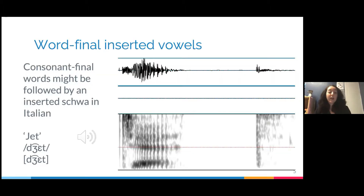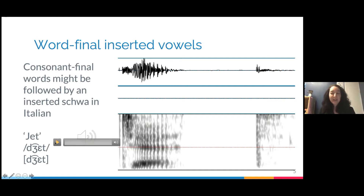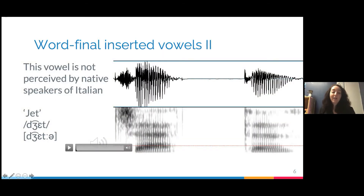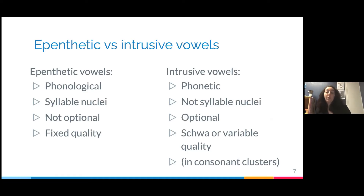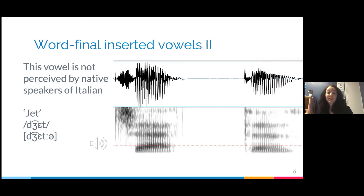Consonant-final words might be followed by an initial schwa in Italian. When we have something like 'GET', an Italian speaker might not have it — or they might have a final schwa at the end, something like 'GET' with a schwa. These schwas at the end of words are not perceived by native speakers, and speakers are not aware that they're producing them.